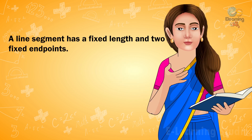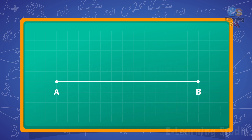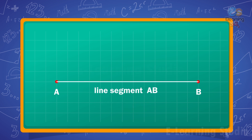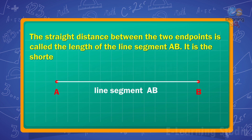A line segment can be drawn by marking two points, say A and B, and then joining them. A and B are the endpoints of the line segment AB, represented as AB. The straight distance between the two endpoints is called the length of the line segment AB.